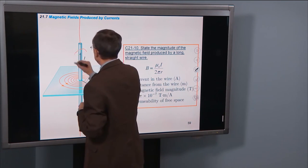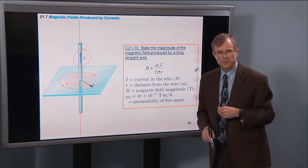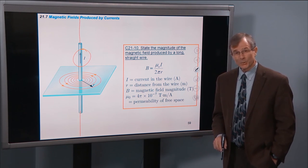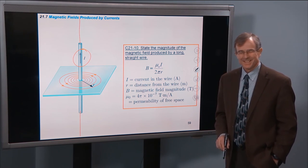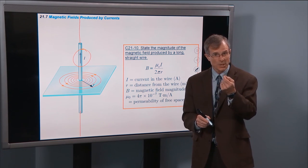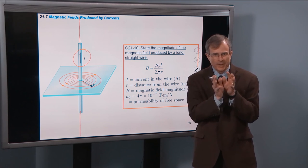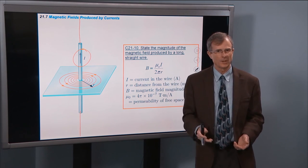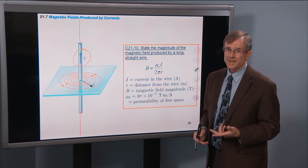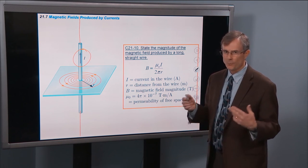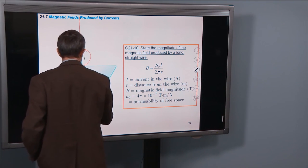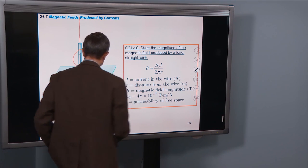Here's my long wire — it has a current I in it. The magnetic fields it produces are in circles around the wire. With electric charges, if we have a positive charge, the electric fields come straight out in all directions — they're radial, like the spokes on a tire. Here, we're not in Kansas anymore. Magnetic fields have weird directions, and this is one manifestation of it. The current in this wire produces magnetic fields that are in circles around the wire.